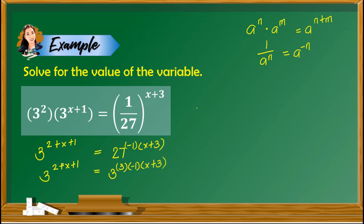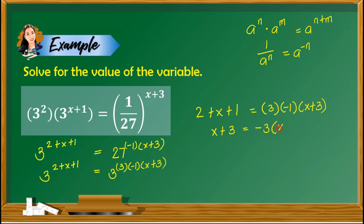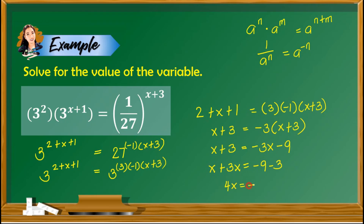Since the bases are the same, we equate the exponents: 2 plus x plus 1 equals 3 times negative 1 times x plus 3. Combining like terms on the left gives x plus 3 equals negative 3 times x plus 3. Distributing the negative 3: x plus 3 equals negative 3x minus 9. Collecting x terms on the left and constants on the right: x plus 3x equals negative 9 minus 3, so 4x equals negative 12. Dividing both sides by 4, x equals negative 3.